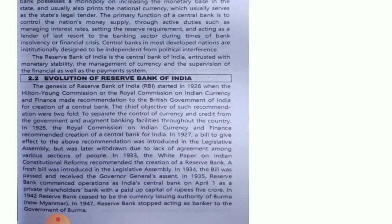In 1942, the Reserve Bank of India ceased to be the currency issuing authority of Burma, now known as Myanmar. In 1947, the Reserve Bank stopped acting as a banker to the government of Burma — it means RBI was also serving as the central bank of Burma before 1948. In 1947, Burma got separated from the Indian constitution.